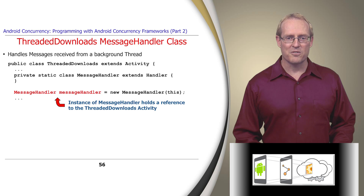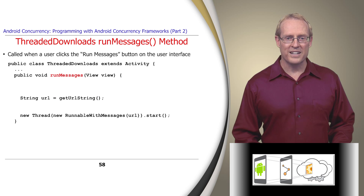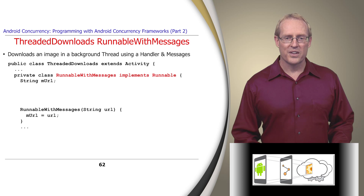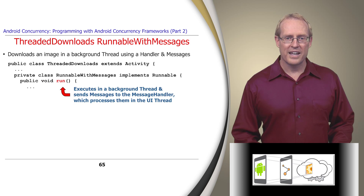An instance of MessageHandler is defined as a data member in the Threaded Downloads class, which passes a reference to itself to the MessageHandler's constructor. The RunMessages method, called when a user clicks the Run Messages button on the user interface, begins by obtaining the requested URL from the user's input. It then creates and starts a new thread to download the requested image in the background via an anonymous instance of the RunnableWithMessages class. This private class implements Runnable, and its constructor stores the requested URL in a data member. Its RunHook method executes in a background thread and uses the Hammer framework to send messages to the MessageHandler object, which processes them in the context of the user interface thread.